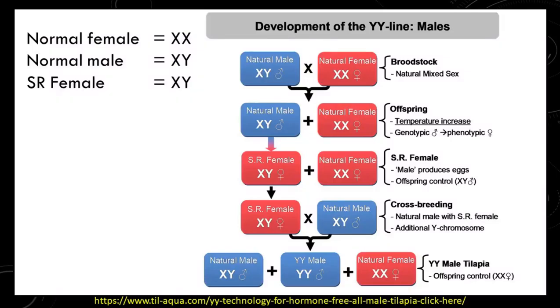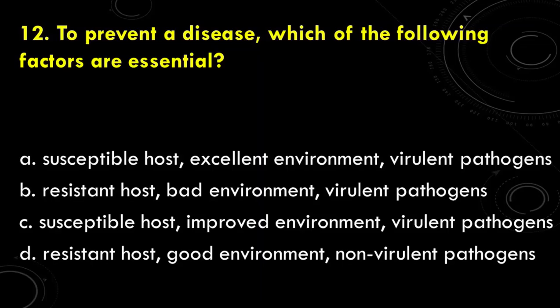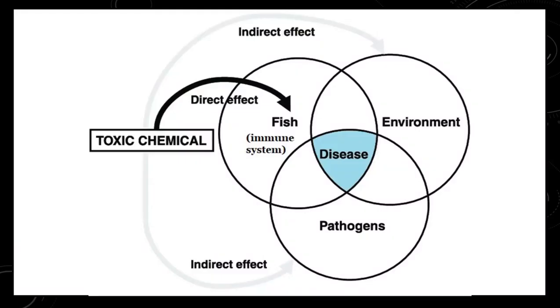Question 12: To prevent a disease, which of the following factors are essential? A. Susceptible host, excellent environment, and virulent pathogens. B. Resistant host, bad environment, and virulent pathogens. C. Susceptible host, improved environment, virulent pathogens. D. Resistant host, good environment, non-virulent pathogens. Disease occurrence usually happens with a compromised immune system, fluctuating or below-optimum environmental parameters, and presence of virulent pathogens. To prevent disease, a culture system must have a healthy and resistant host, an environment with optimum parameters for growth, and pathogens must be eliminated.